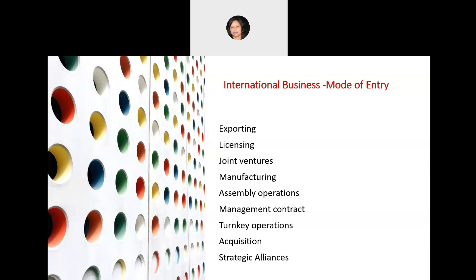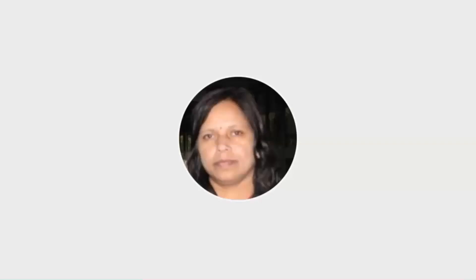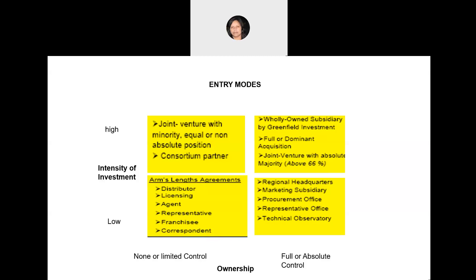When a company is embarking on an international venture, there are two primary considerations. The first is the extent of ownership the company would like to have across different markets it chooses to serve. The second is the intensity of investment — how much capital the company would be interested to invest in these different markets. These two factors primarily define the mode of entry.